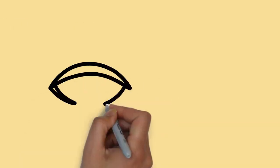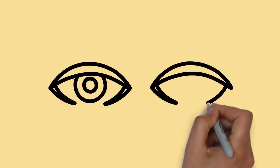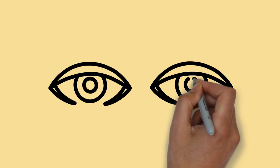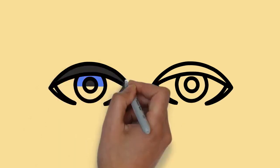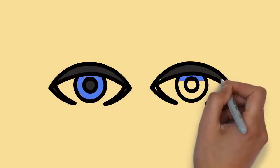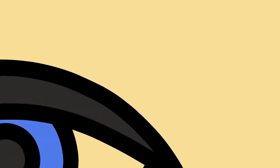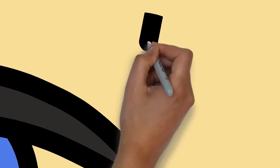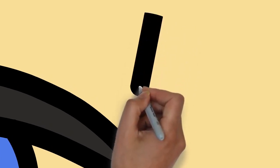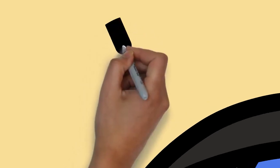It is approximately spherical in shape, with its outer layers, such as the outermost white part of the eye, the sclera, and one of its inner layers, the pigmented choroid, keeping the eye essentially light tight except on the eye's optic axis.